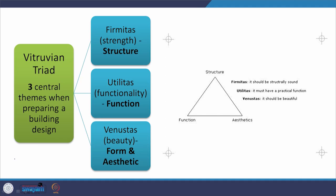The Vitruvian Triad represents three vertices of a balanced equilateral triangle — three central themes when preparing a building design. What he called Firmitas, that is strength or structure; Utilitas, that is function; and Venustas, that is beauty or, in modern language, form and aesthetic. So three fundamental things — structure, function, and form — coming together in a very balanced manner create a good design.